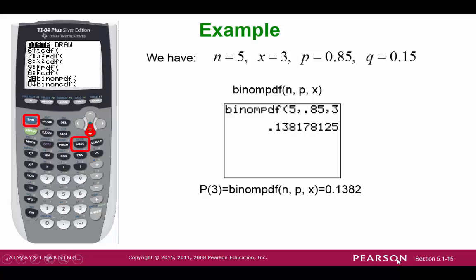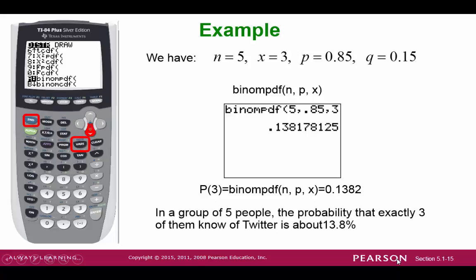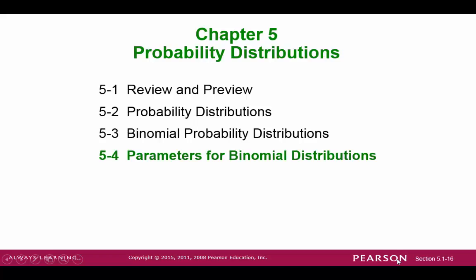We punch this into our calculators and we get 0.1382. So if you randomly select 5 people, the probability that exactly 3 of them know of Twitter is about 13.8%.